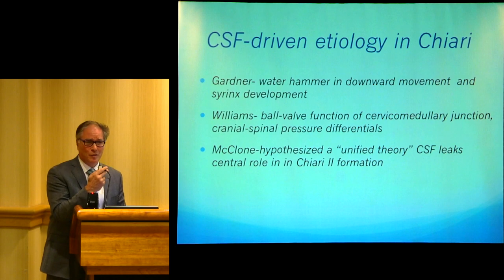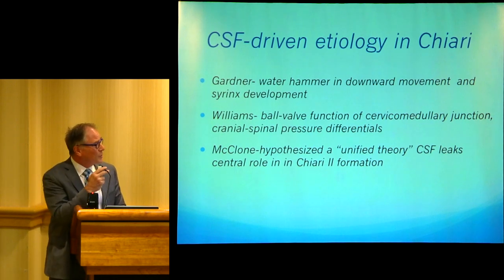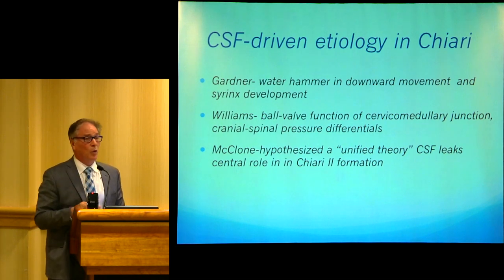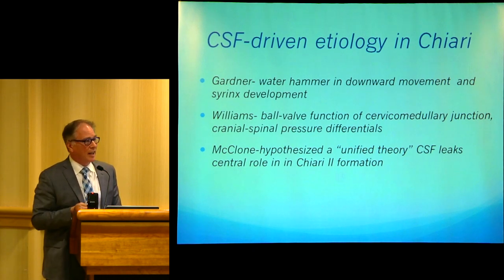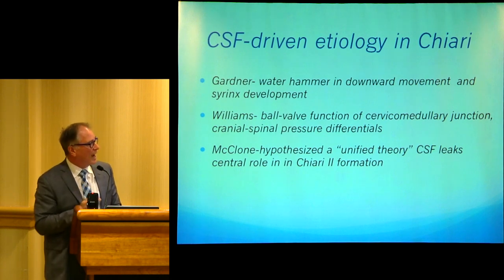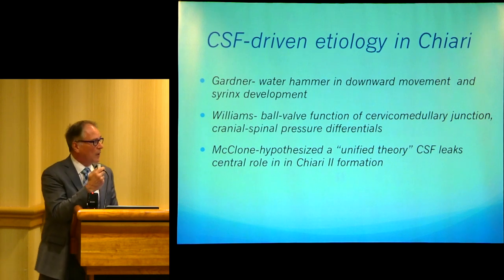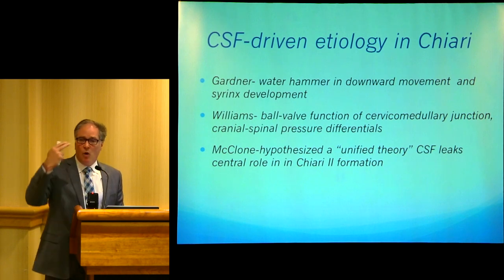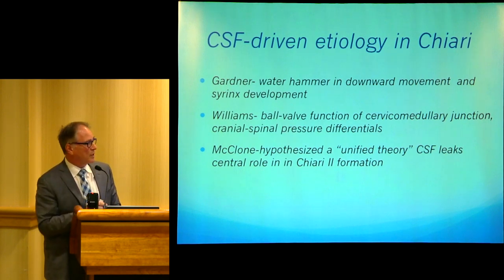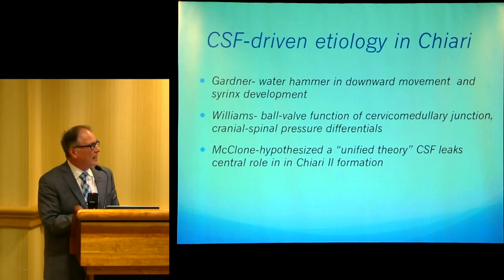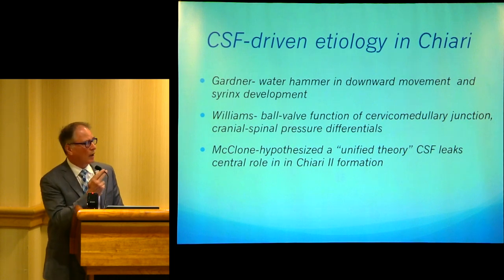Our Chiari founding fathers also looked at CSF as having a primary role in the etiology of congenital Chiari malformation in its development. Gardner described a pushing downward of the posterior fossa and creation of a syrinx in what he called a water hammer type effect. Williams described more of a sucking down due to a ball valve effect — the lower pressure of the spinal cord sucking down the cerebellar tonsils. McClone also had a hypothesis for Chiari 2 malformation with myelomeningocele, in which herniation of the cerebellum was caused by early CSF leak and low pressures in the spinal canal. CSF pressure, movement, and obstructions have played a prominent role in our thinking about Chiari even from the early years.